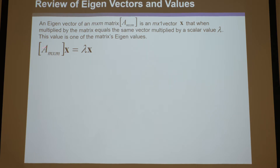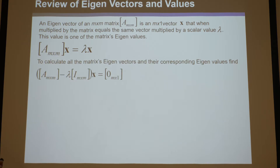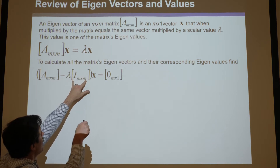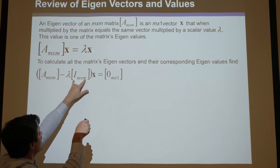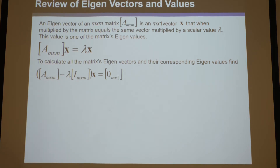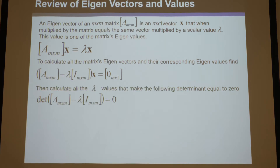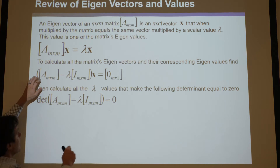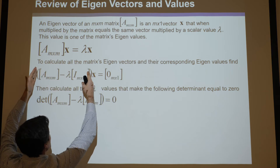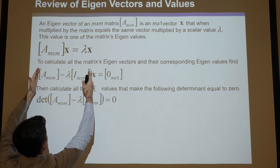Let's use this definition of what they are. If we subtract from both sides, you can multiply this by any identity matrix — lambda times the identity matrix times x — that would be the same thing. Then subtract it from both sides, and now this equals zero. What you could do is find the determinant; you would know that this equation will be true as long as the determinant of this equals zero.